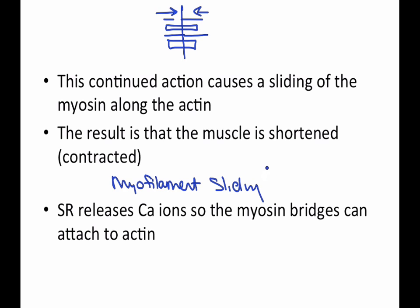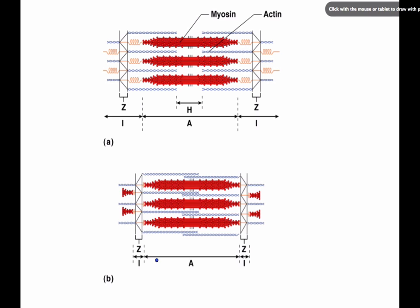The result is the muscle appears shortened or contracted, but the myofilaments are sliding — not actually getting shorter. The sarcoplasmic reticulum will then release calcium ions so the myosin bridges can attach to actin. That might not make complete sense yet, so let's move on and explain it better. The dark red ones are the myosin, and the curvy blue ones are the actin.